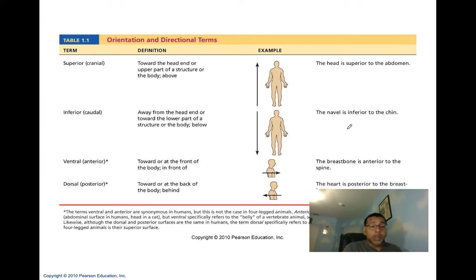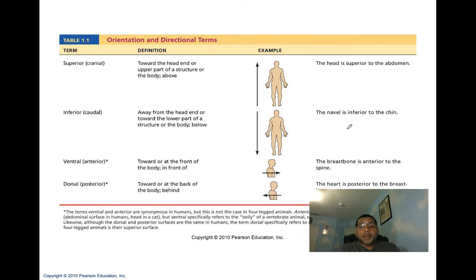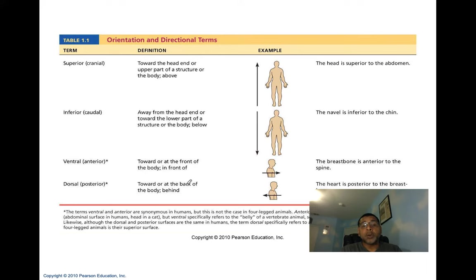Next are ventral (also anterior) and dorsal (also posterior). Ventral or anterior means towards or at the front of the body. The breastbone is anterior or ventral to the spine. Dorsal or posterior means towards or at the back of the body, or behind something. The heart is posterior to the breastbone. When we go to the beach, we look out for the dorsal fin of a shark.